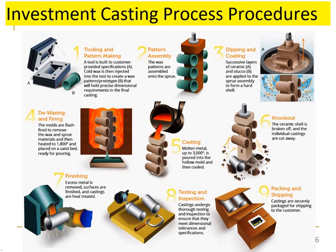Step one: tooling and pattern making. A tool is built according to the required specifications (A), then cold wax is injected into the tool to create a wax pattern or prototype (B), which holds precise dimensional requirements for the final casting. Step two: pattern assembly — wax patterns are assembled onto the sprue. Step three: dipping and coating — successive layers of ceramic (A) and stucco (B) are applied to the sprue assembly to form a hard shell. Step four: de-waxing and firing — the molds are flash-fired to remove the wax and sprue materials, then heated to 1,800°C and placed on a sand bed ready for pouring.